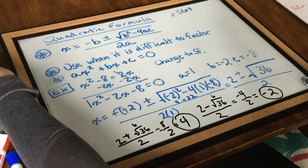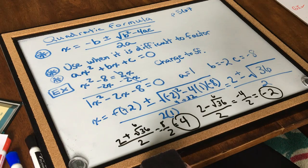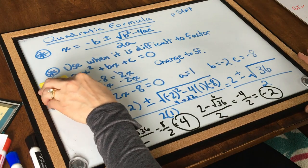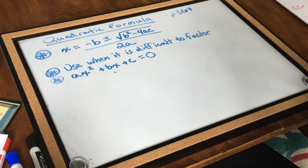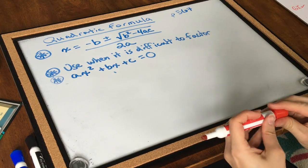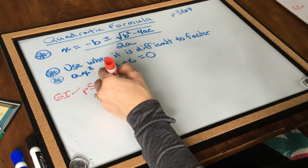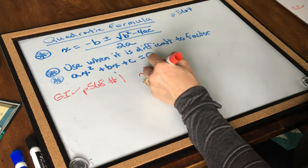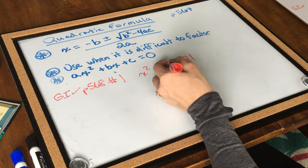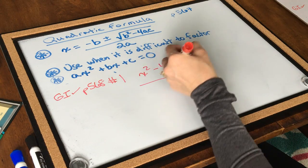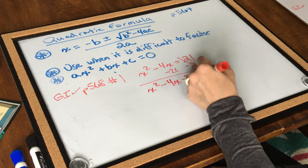I think you're ready for your gotta check. Your gotta check is page 568 number 1 — pause the video and give it a try. The gotta check is: x squared minus 4x equals 21. I have to play the game of switcheroo, so I'm going to subtract 21 from both sides. That gives me standard form: x squared minus 4x minus 21 equals 0.